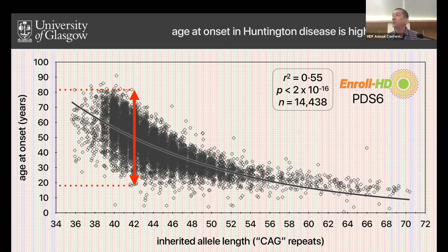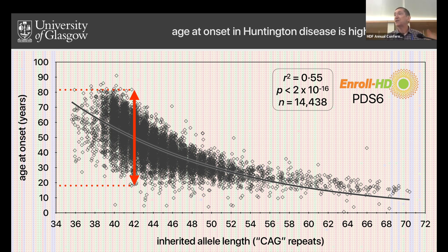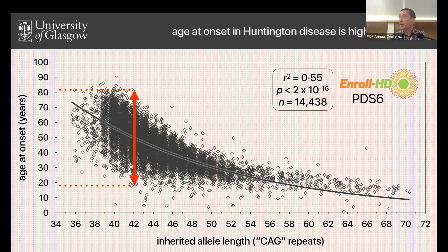When we have large well-characterized cohorts, we can identify what those genetic modifiers might be. If we understood those genetic modifiers, that might provide us with more druggable targets — understanding why a subset of people get symptoms early, or why others are relatively protected, and applying that knowledge to hopefully delay onset or even improve the presentation of the disease.